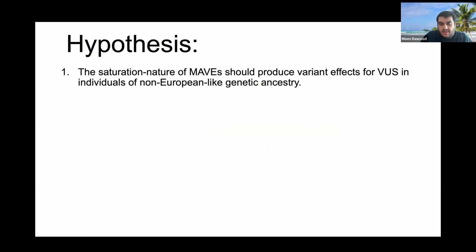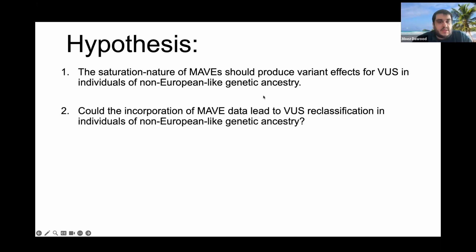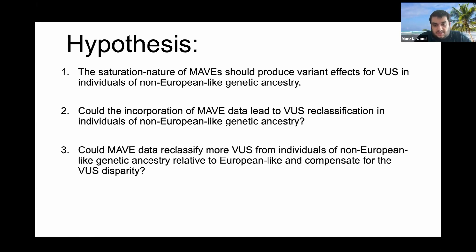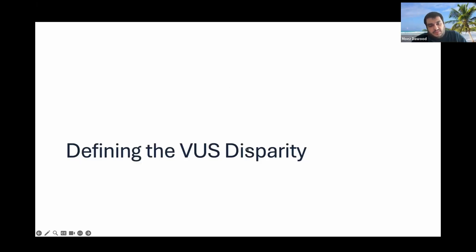Since you're producing experimental scores for every possible variant in your target locus, if there are any VUS from individuals of non-European genetic ancestry, you are producing experimental scores for those VUS. So could the incorporation of MAVE data lead to VUS classification in individuals of non-European genetic ancestry? And can you use that MAVE data to reclassify more VUS from individuals of non-European-like genetic ancestry relative to European-like genetic ancestry, and actually compensate for that known VUS disparity?